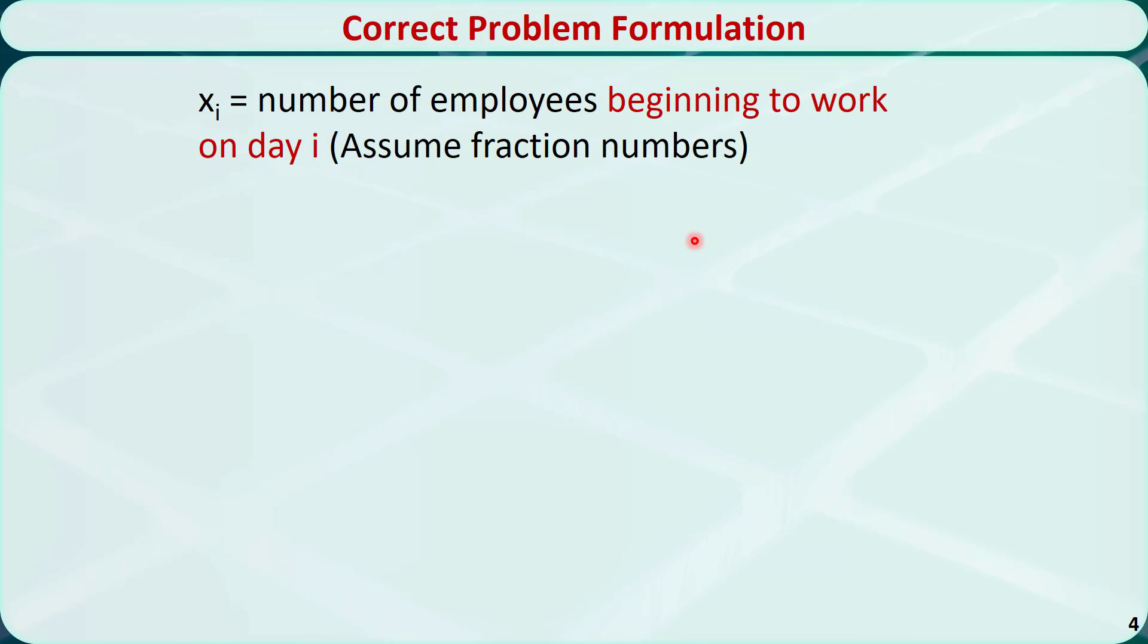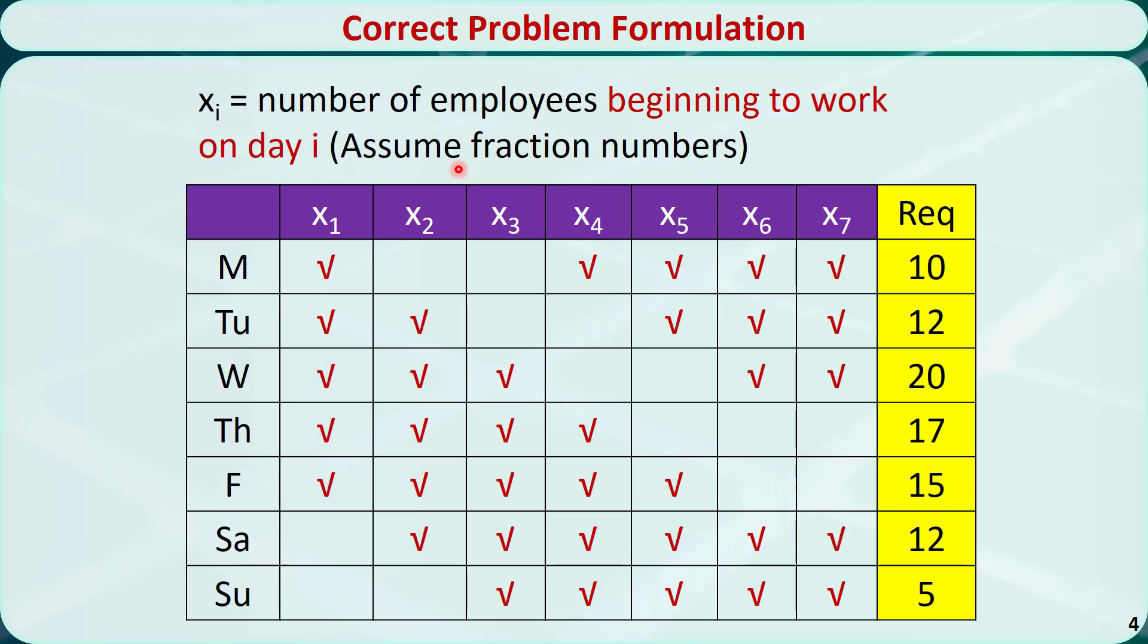Now let's change the variable definition to this. xi is the number of employees beginning to work on day i, i is from 1 to 7. We still assume xi can take fractional numbers, so it will be a linear programming problem.